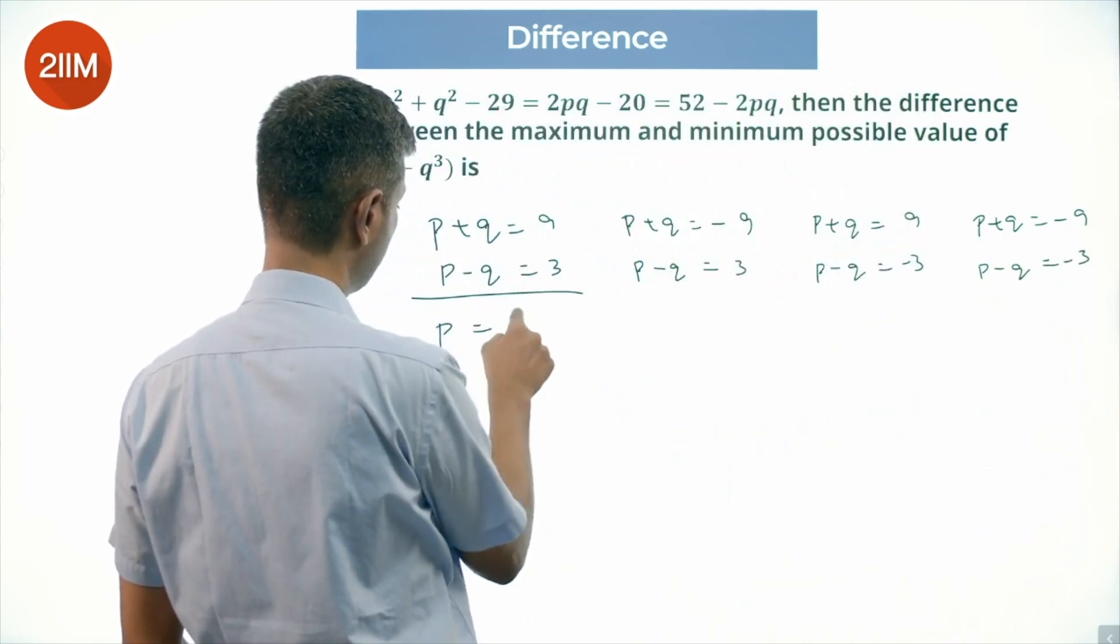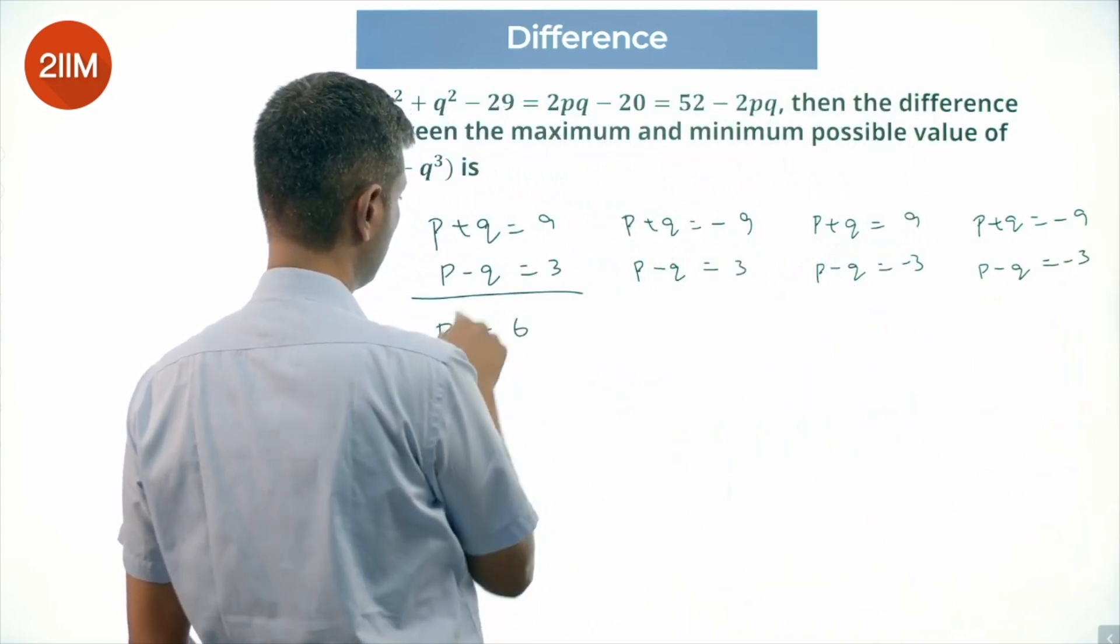2P is 12, P is 6, 6 minus Q is 3, Q is 3.